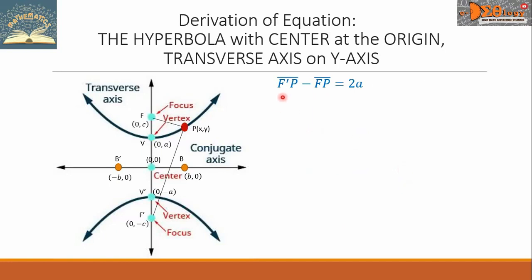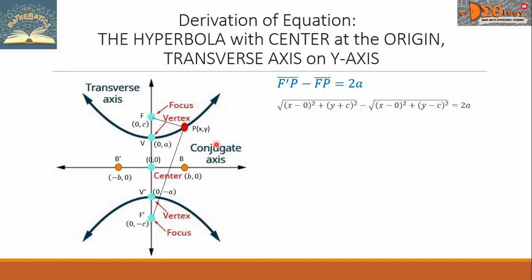Let us write the respective distances. F'P equals the square root of (x − 0)² + (y − (−C))², minus FP, which equals the square root of (x − 0)² + (y − C)², and all equals 2A. We simplify x − 0 as just x, so we write x² and x² in both expressions.